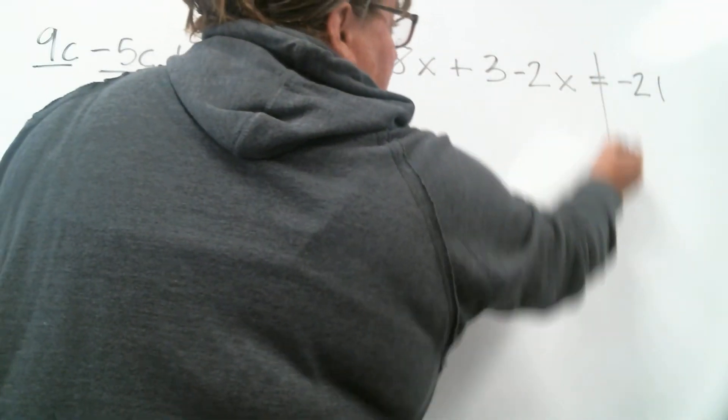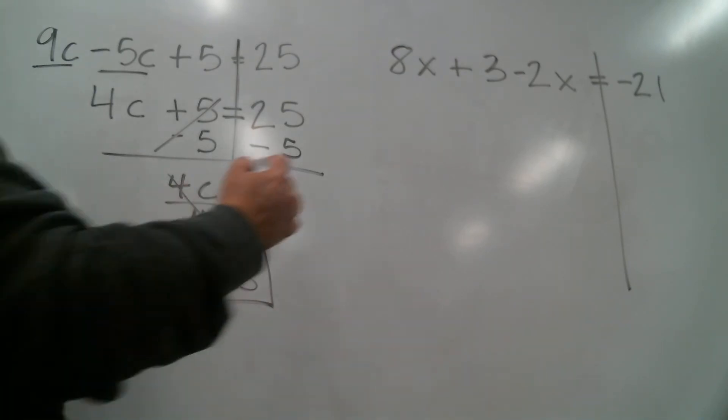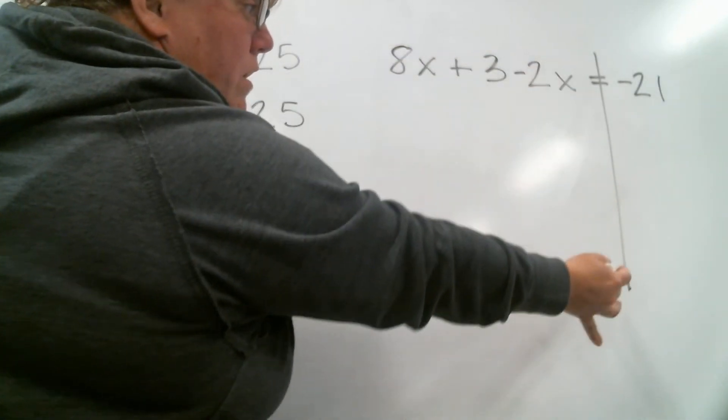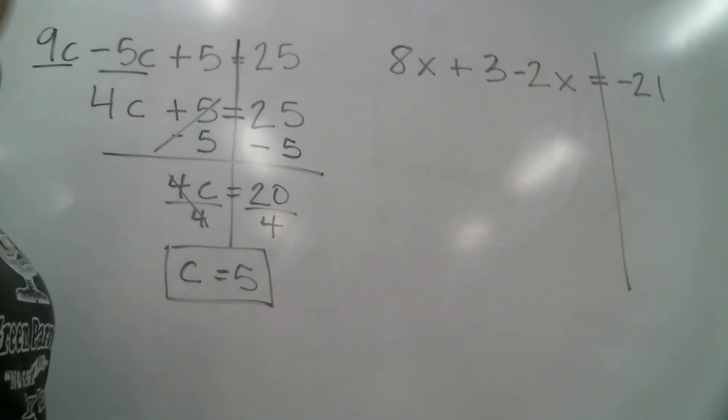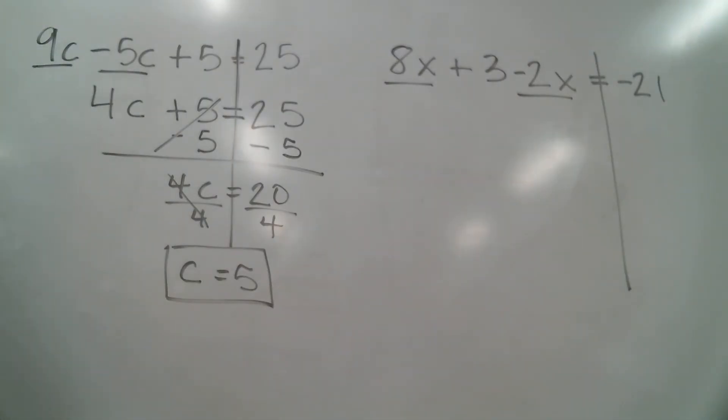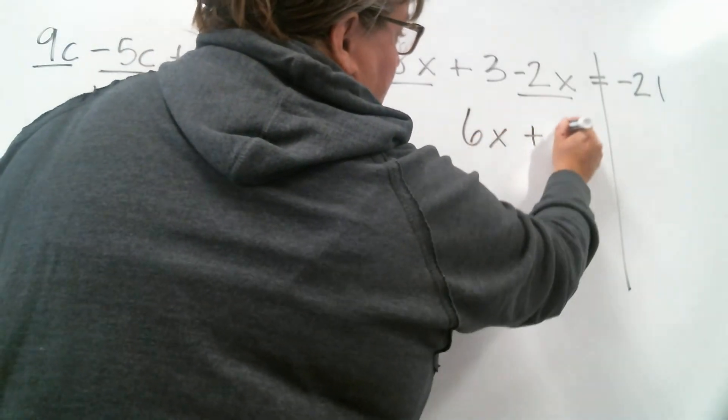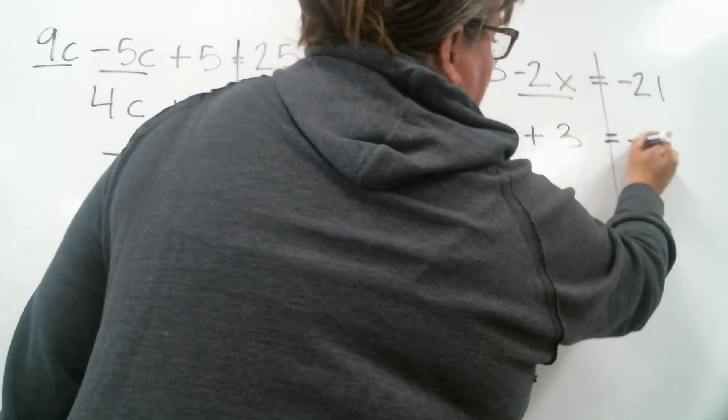Let's look at this next one. It says 8x plus 3 minus 2x equals negative 21. So if I look over here on this side together, that's why I draw the line down the equal sign where the balance is, because we need to see if the like terms are on the same side together. When they're on the same side together we're gonna combine them up. So I have a positive 8x and a negative 2x. And a positive 8 and negative 2 combined would leave me with 6x plus 3 equals negative 21.